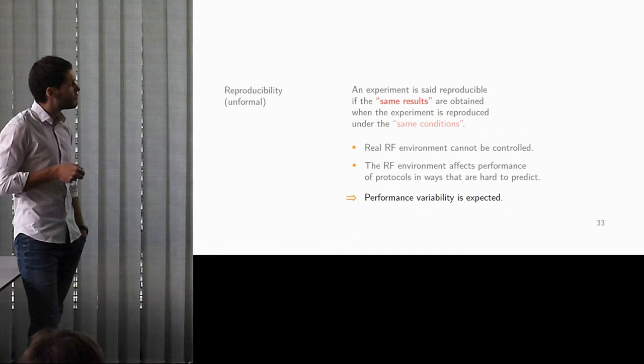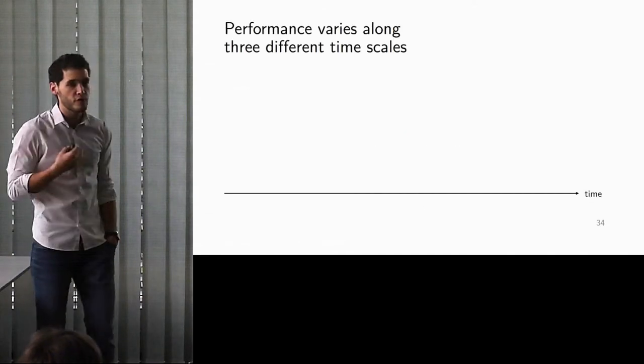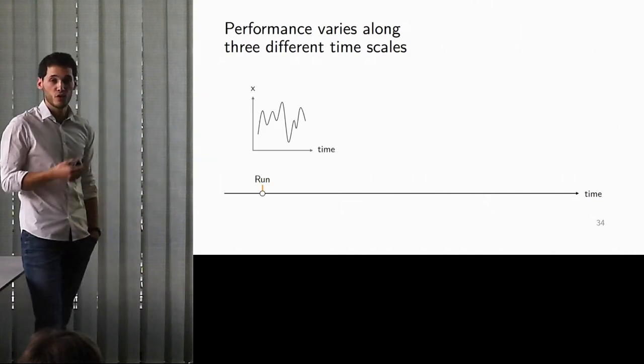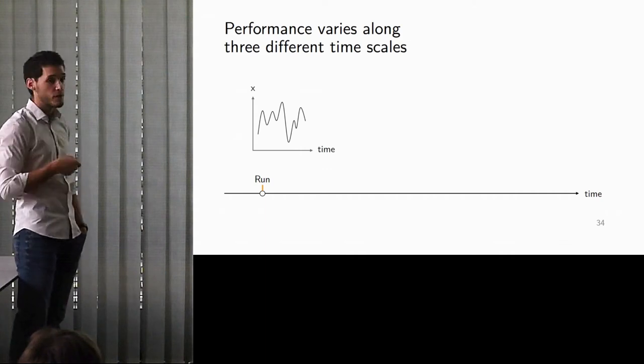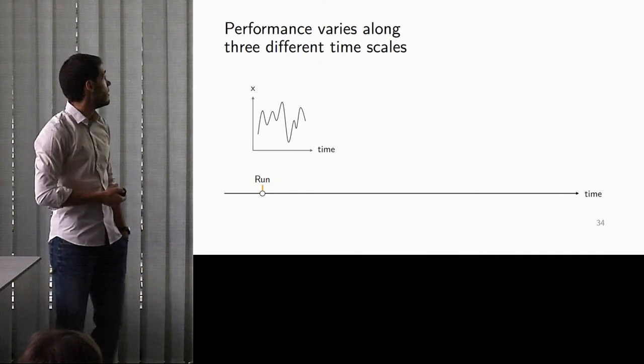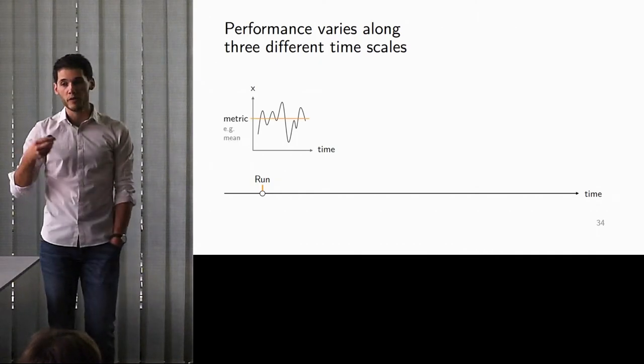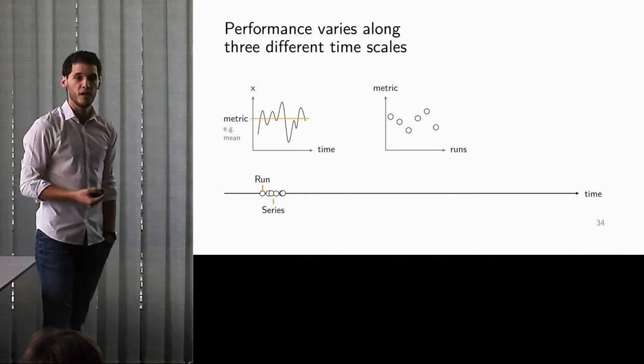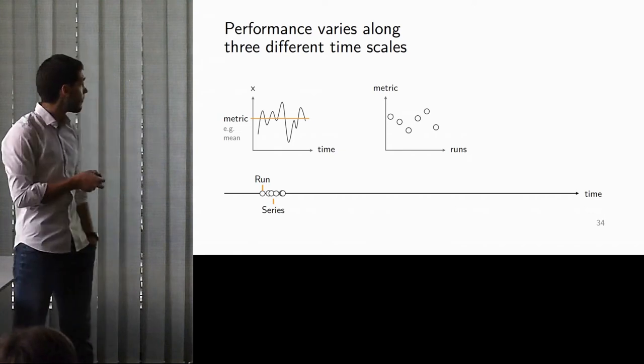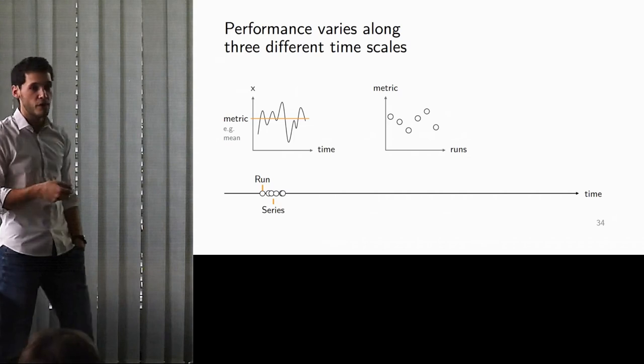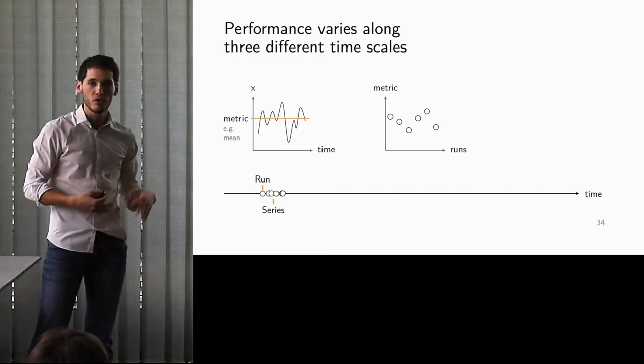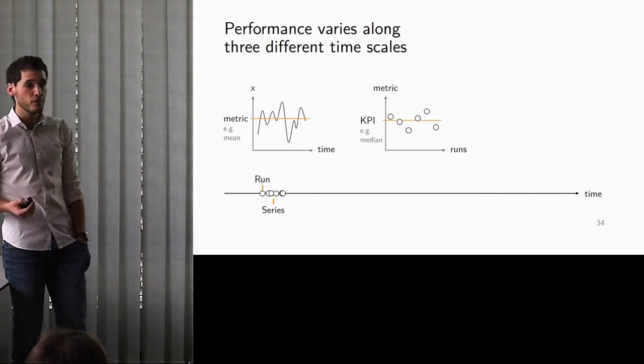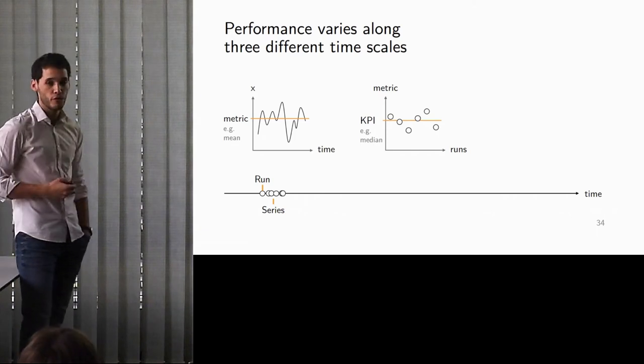So we started thinking about this performance variability, and I argue that you can see performance variability along at least three different timescales. First is the timescale of a run. You run your protocol once, you measure some quantity x that will vary over time, and then at the end of this run, you will somehow aggregate your result with using a metric, for example, the mean of your measurements. And you will repeat this experiment in what I call a series of runs, and your metric value will most probably vary over time. And so you need to account for this variability, and this is often done using what is called a key performance indicator, or a KPI, that could be, for example, the median of the metric value you've obtained.